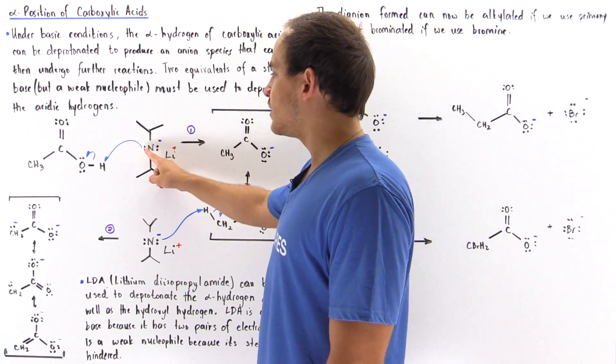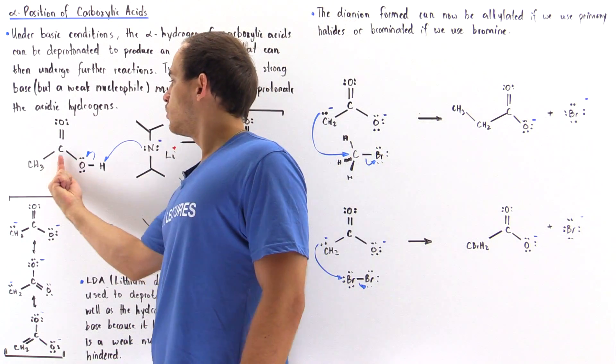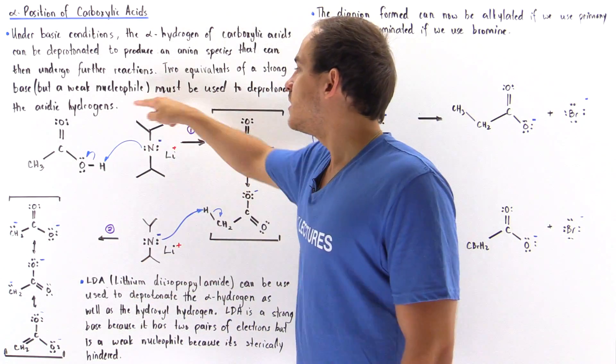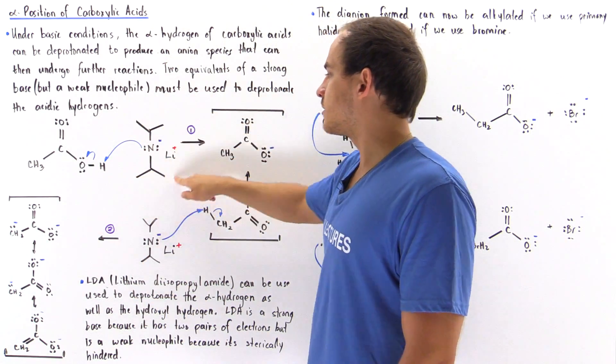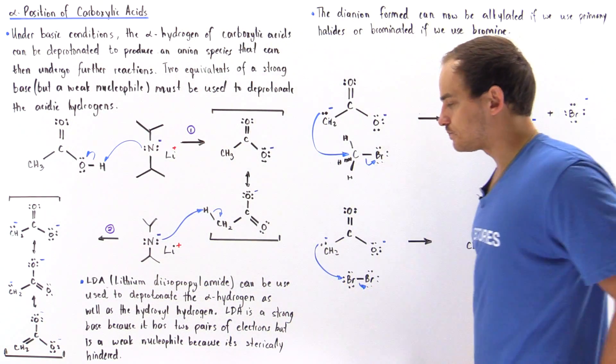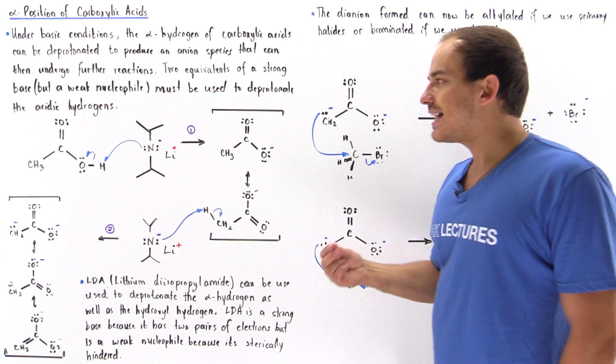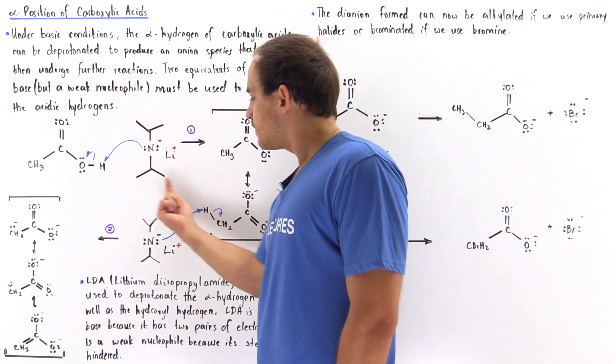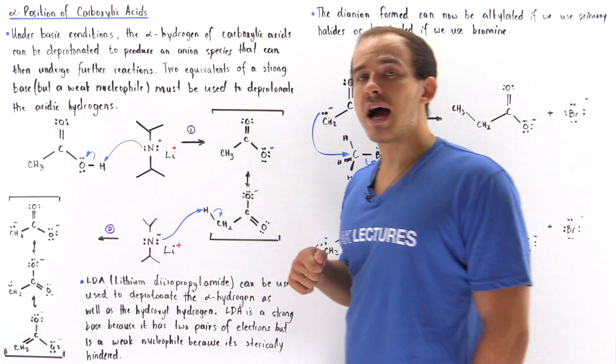Now notice this nitrogen cannot attack this carbon nucleophilically because it is simply too sterically hindered and will not have space to approach this carbon here. Now if we add a second equivalent of this LDA, lithium diisopropylamide,